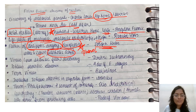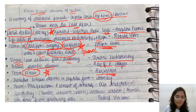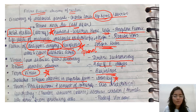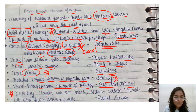For virus discovery: Dmitri Ivanovsky discovered tobacco mosaic disease, and the term 'virus' was coined by Beijerinck. Stanley isolated the tobacco mosaic virus in crystalline form. The concept of phagocytosis and immunity was given by Elie Metchnikoff.